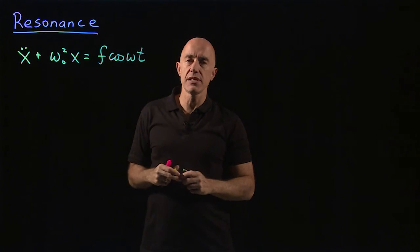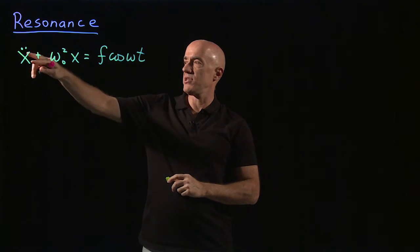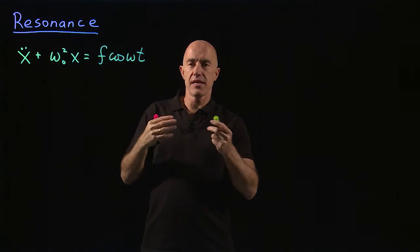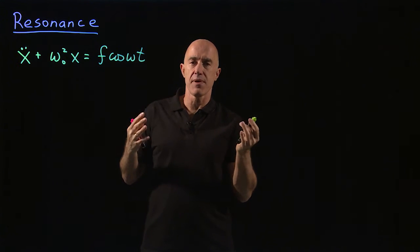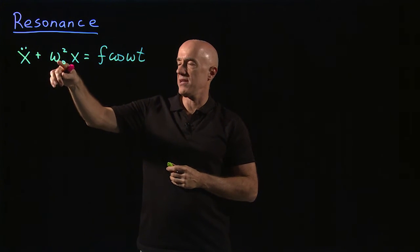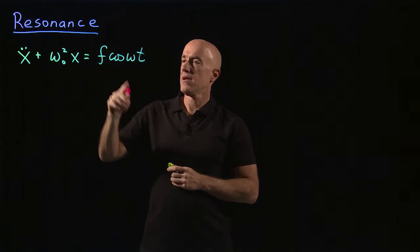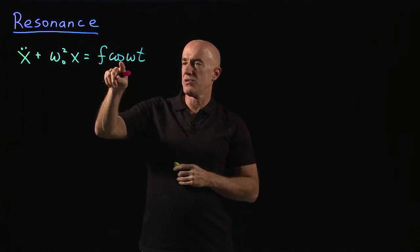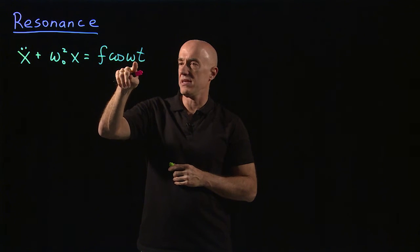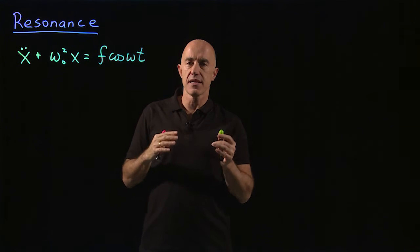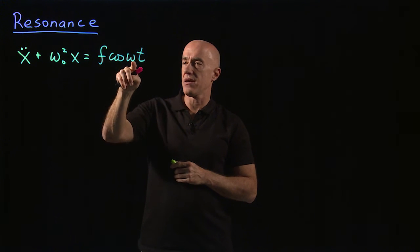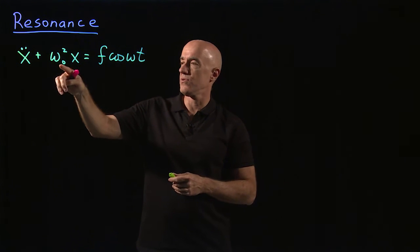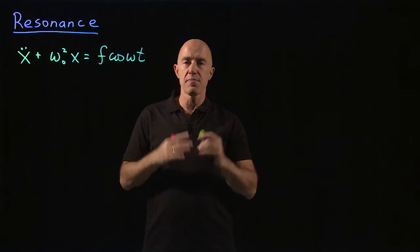The homogeneous part of this equation — x double dot plus omega naught squared x equals zero — is the wine glass by itself. It has a natural frequency omega naught. The f cosine omega t is modeling the voice that the person is singing at frequency omega. Resonance is going to occur when omega gets close to omega naught, in the limit that omega goes to omega naught. So that will be our model.